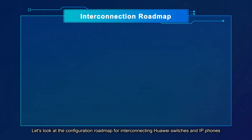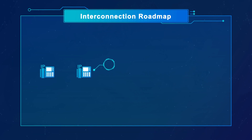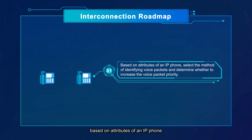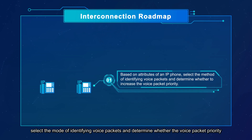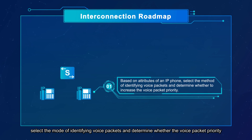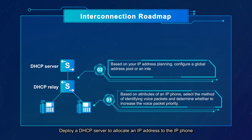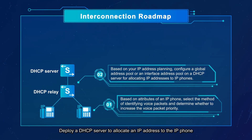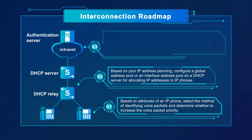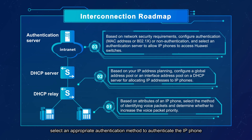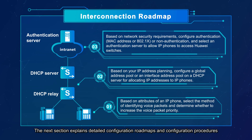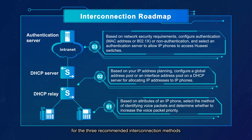Let's look at the configuration roadmap for interconnecting Huawei switches and IP phones. First, based on the attributes of an IP phone, select the mode of identifying voice packets and determine whether the voice packet priority needs to be improved. Then deploy a DHCP server to allocate an IP address to the IP phone. Finally, select an appropriate authentication method to authenticate the IP phone. The next section explains detailed configuration roadmaps and procedures for the three recommended interconnection methods.